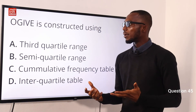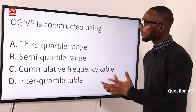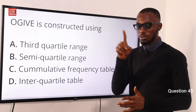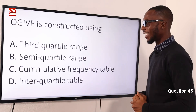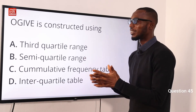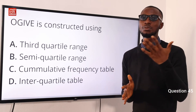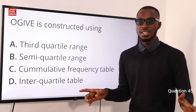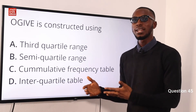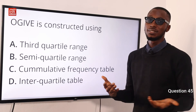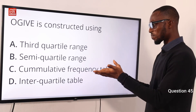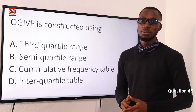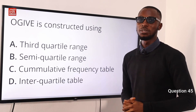Question 45: An ogive graph is constructed using what? An ogive graph looks like an S-curve and is constructed using cumulative frequency on the vertical axis and upper class limit on the horizontal axis. Option C, cumulative frequency table, is the correct option.